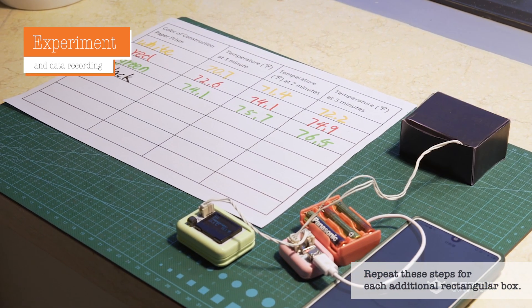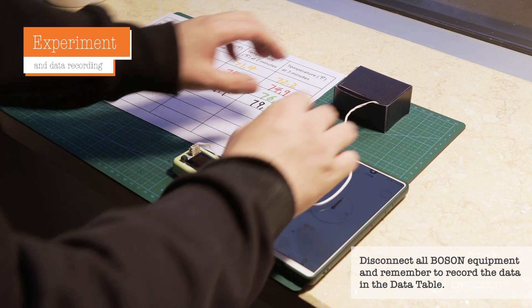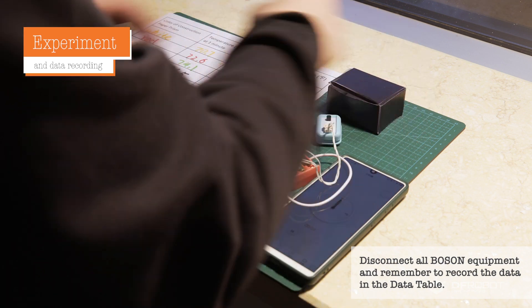Turn off the Boson mainboard and move to the shade for a minute. Repeat steps 2 through 6 for each additional rectangular box. Disconnect all Boson equipment, and remember to record the data in the data table.